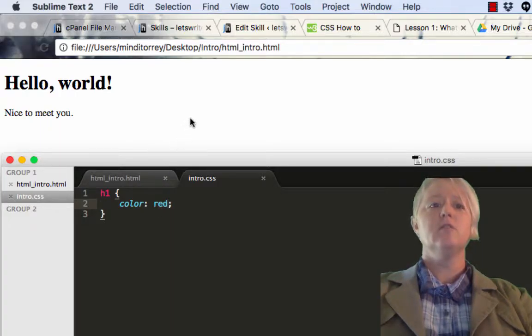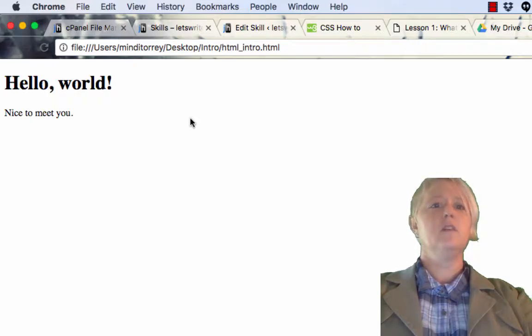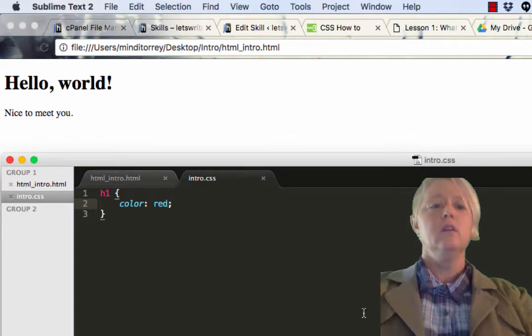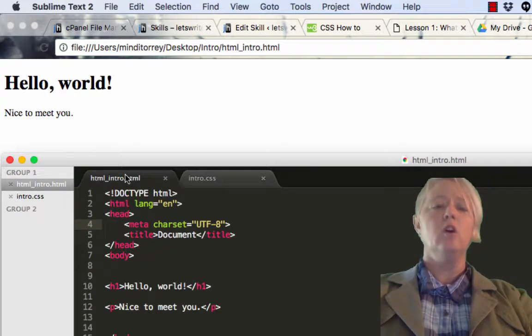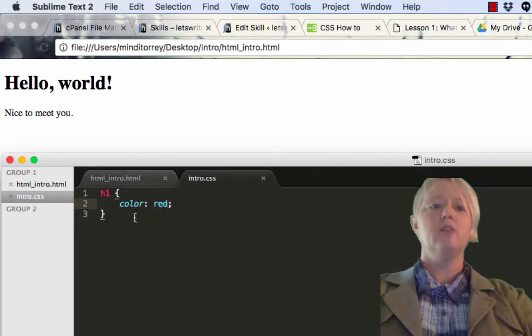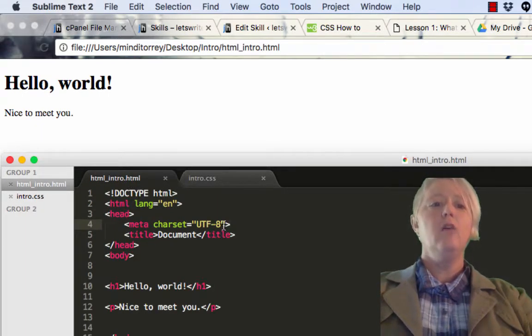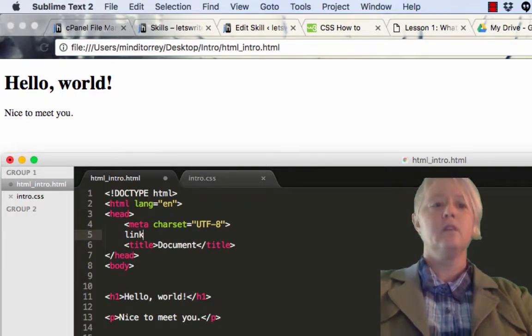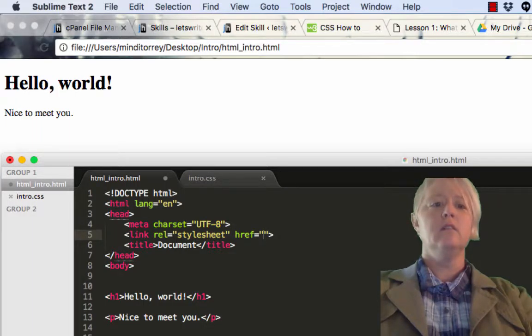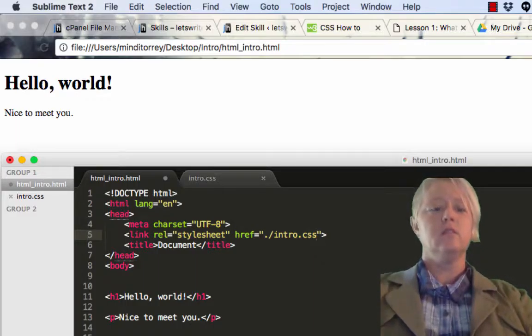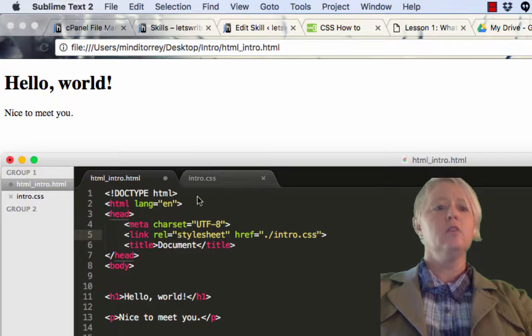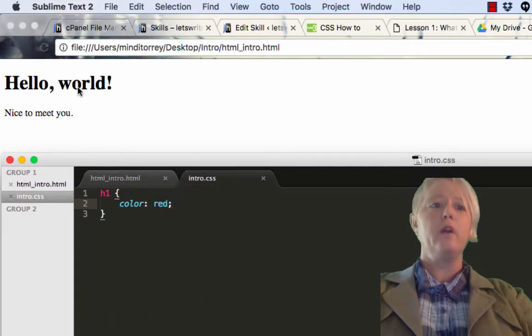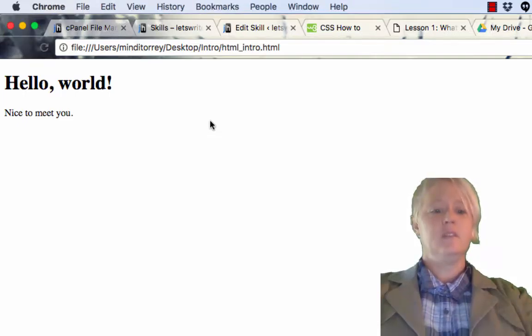Now, before we can see any changes, if you notice, if I refresh, nothing changes. But, we need to do one other thing so that our HTML file knows that it's supposed to get the styles from this file right here. And, all we need to do in order to do that is, in the head of our HTML file, we need to add a line that links the CSS file to the HTML file. We called that intro.css. We should now be pulling in the styles from this external stylesheet and our H1 should be red. Let's see. Amazing! It's web magic.